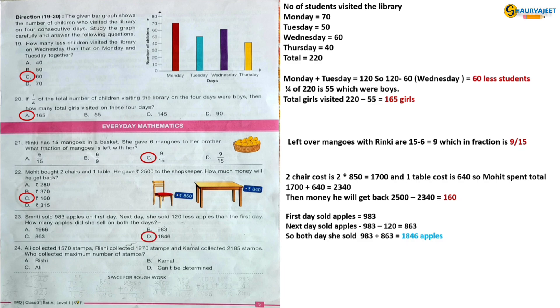Question 24: Ali collected 1570 stamps, Rishi collected 1270 stamps, and Kamal collected 2185 stamps. Who collected maximum number of stamps? Yes, you guessed it right. Kamal collected the maximum number of stamps, and that is 2185. So the correct option is option B, Kamal.